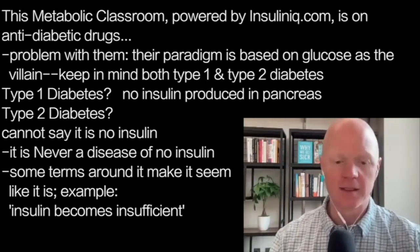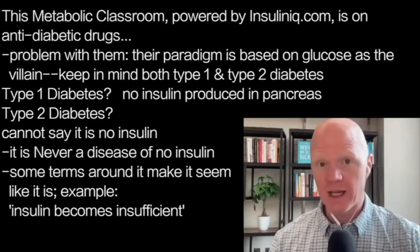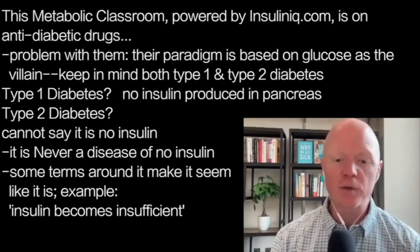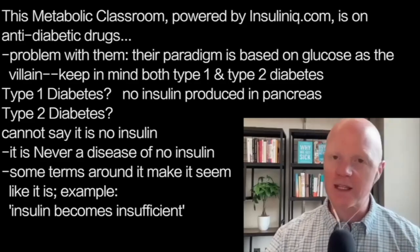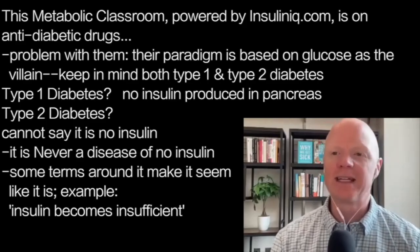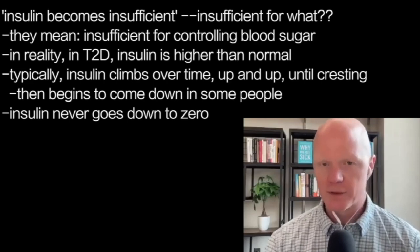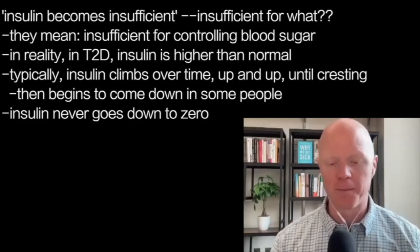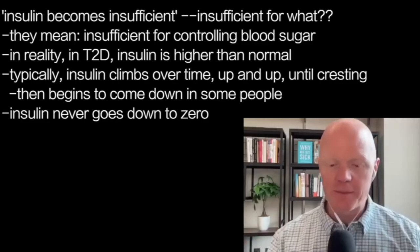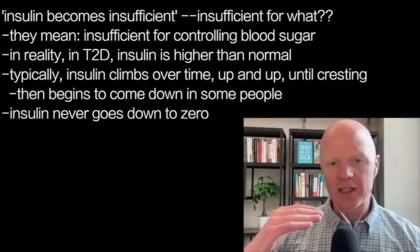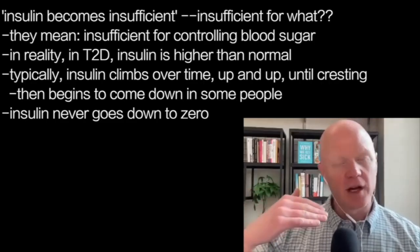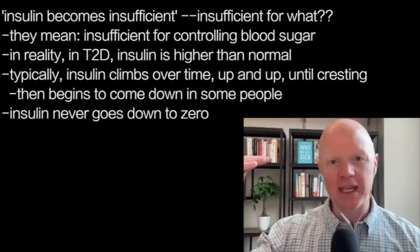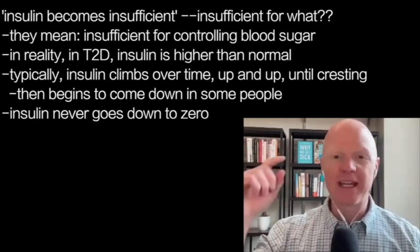With type 2 diabetes, you can't say it's a disease of no insulin because it isn't — it is never a disease of no insulin. Unfortunately, some language surrounding type 2 diabetes makes us think otherwise, using terms like 'insulin becomes insufficient.' What they mean is it's insufficient for controlling blood sugar levels. In reality, in actual type 2 diabetes, insulin levels are higher than normal. Over the life of the type 2 diabetic, insulin levels go up and up and up, and in some instances may crest and start to come down — but never to zero.